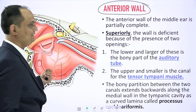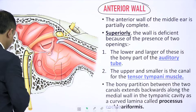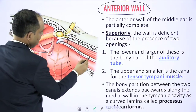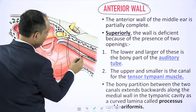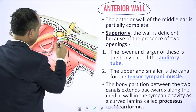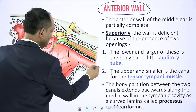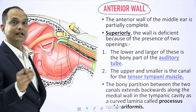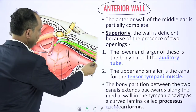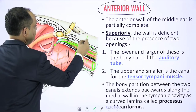Now we move to the anterior wall. Looking at the sagittal section of the right ear, the anterior wall is opposite the mastoid process posteriorly. In this anterior wall there is a bony plate, and above and below that plate are two structures. Above the plate there is a muscle approaching inside the middle ear cavity. So in the anterior wall there are two channels: the upper channel is for the tensor tympani muscle, and the lower larger channel is for the auditory tube.